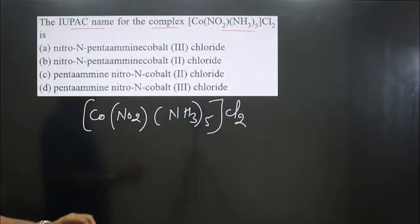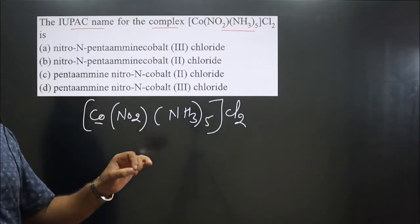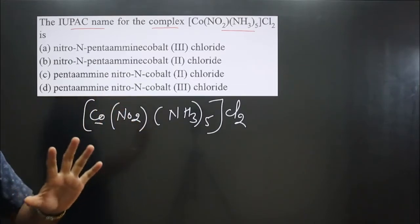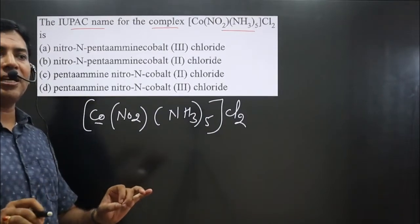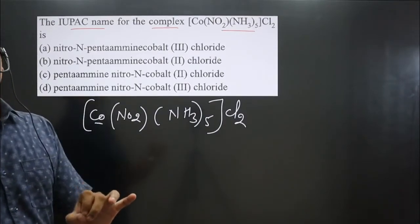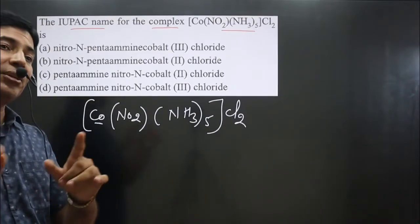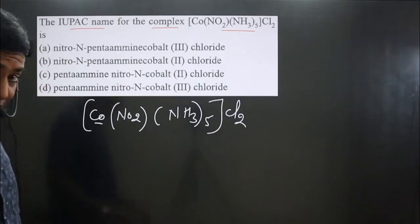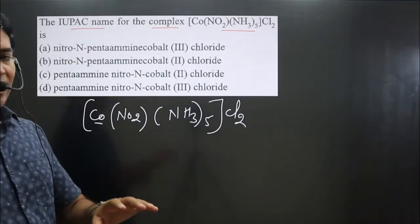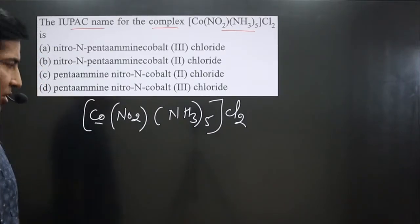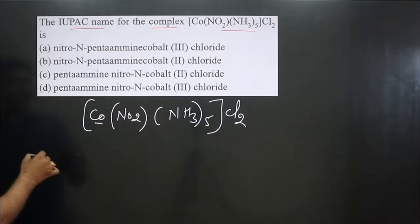Before naming the complex, always identify if the central element is present in the cationic complex or anionic complex. If the central element is present in the cationic complex, we always use its common name as given in the periodic table. If it is present in the anionic complex, then we use the special name.